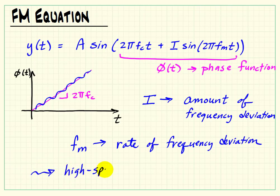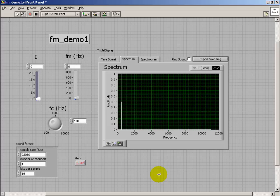In a sense, we can think of this as being a high speed version of the vibrato equation. And the idea now is to allow the modulation frequency to be in the audio range.